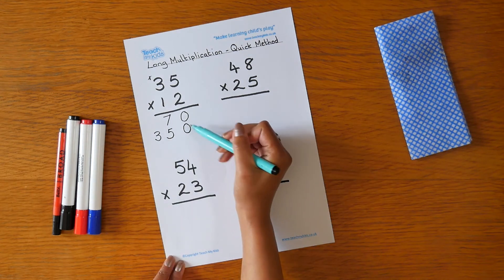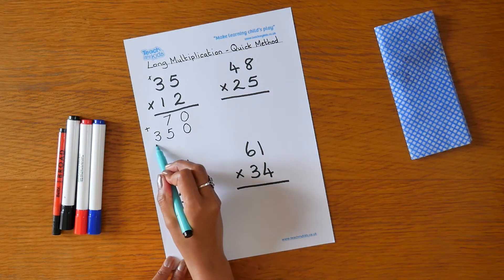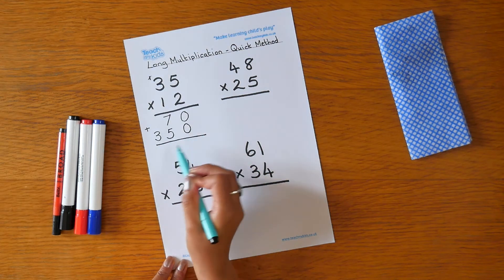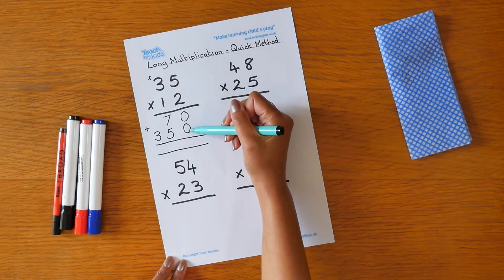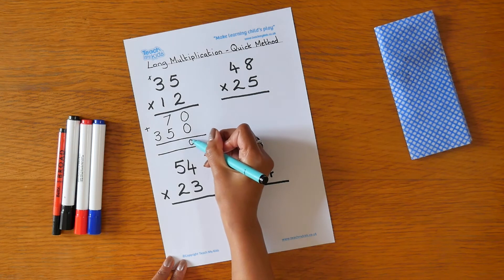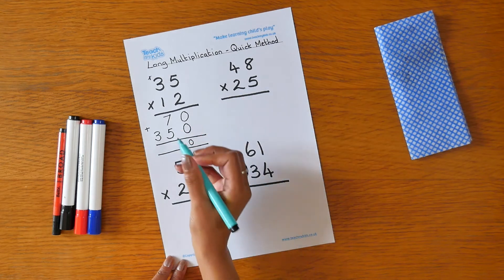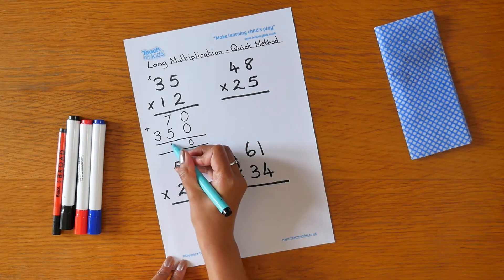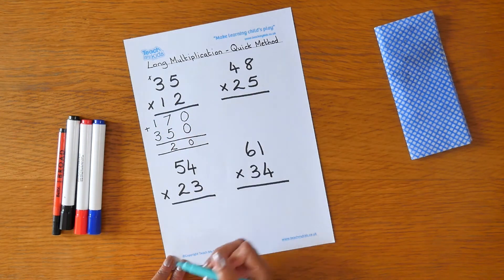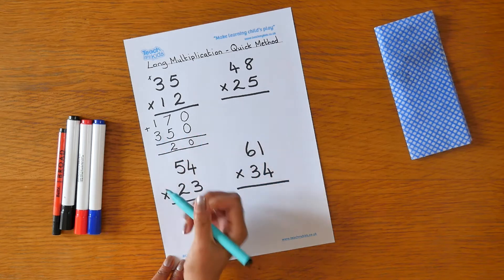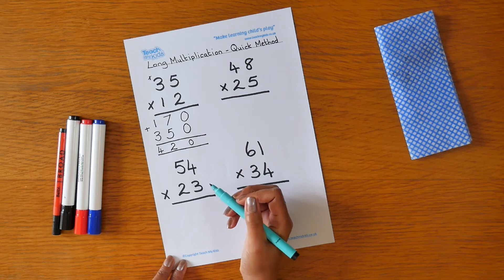We can now add our two numbers together. So we put our add symbol in and we're ready to find our answer. 0 add 0 is 0. 7 add 5 is 12. So we've put our 2 down here and we are carrying the 1. 1 add 3 is 4. So our answer is 420.